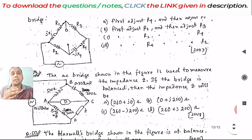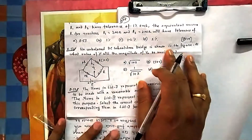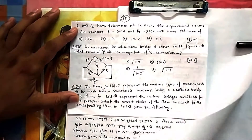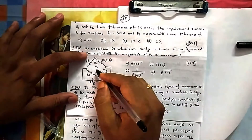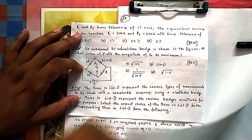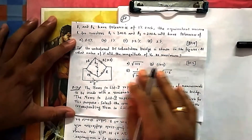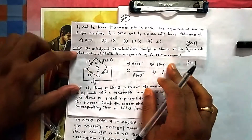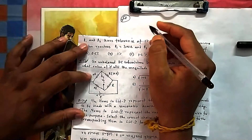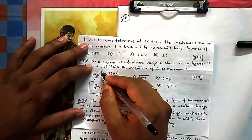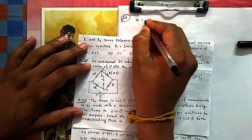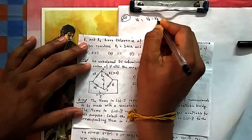An unbalanced DC Wheatstone bridge is shown in the figure. At what value of p will the magnitude of V0 be maximum? You can calculate the magnitude of V0 in terms of p, then differentiate it to get the maximum value. V0 will be Va minus Vb, as solved in other examples.